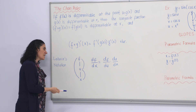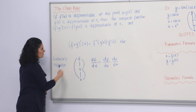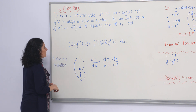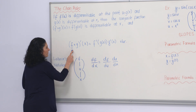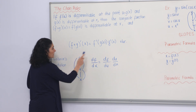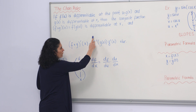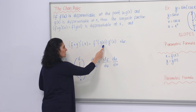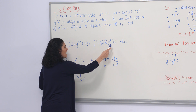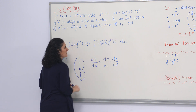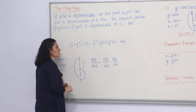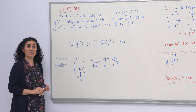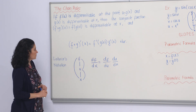We can talk about the chain rule using the inside-outside rule. f is the outside function, g is the inside function. Take the derivative of the outside function, evaluate it at g(x), then calculate the derivative of the inside function, and multiply them. This is the inside-outside rule for the chain rule.